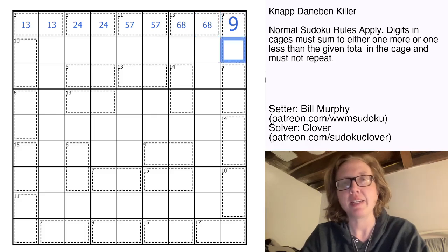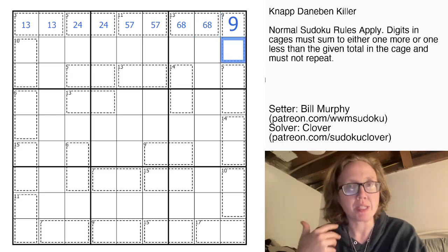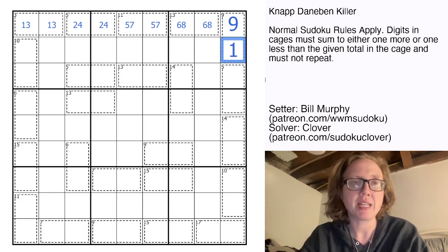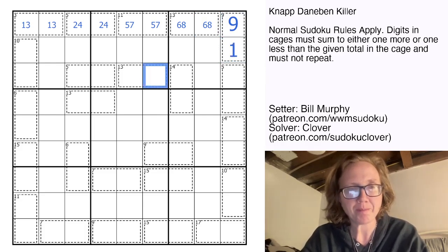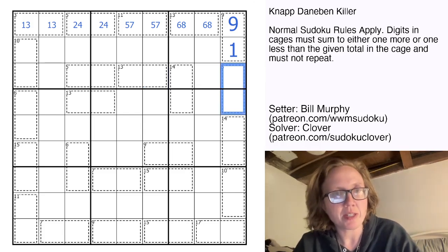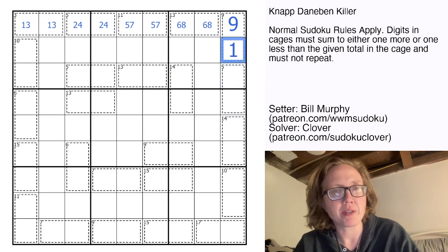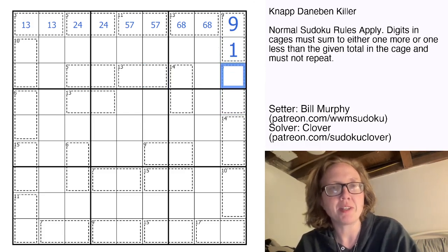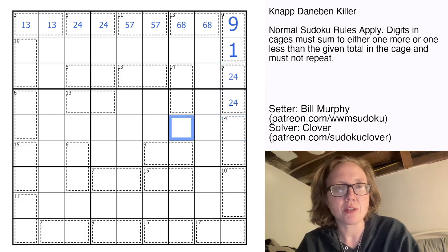Now we have a nine cage that has a nine in it, so we can only go to at most 10 to be off by only one. So that is going to be a one. Now, if we want to make a sum of five, can't go down by one because we would have to do one plus three and we've already used the one. So we have to go up by one and make a total of six, which is two plus four.